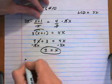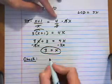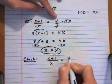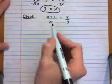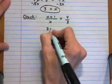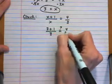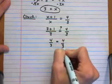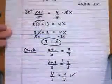Now let's check the equation to make sure that x = 3 really does make this a true statement. Back to the original equation: (x + 1)/x = 4/3. Putting in x = 3, we get (3 + 1)/3 = 4/3, which gives 4/3 = 4/3. Yes, so x = 3 is a solution to our equation.